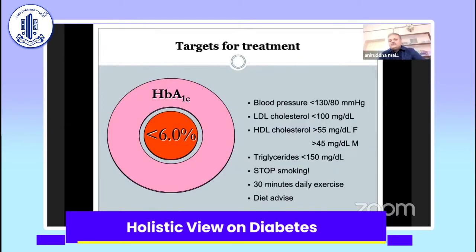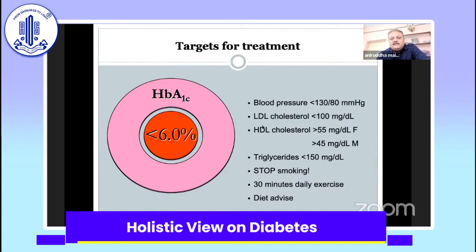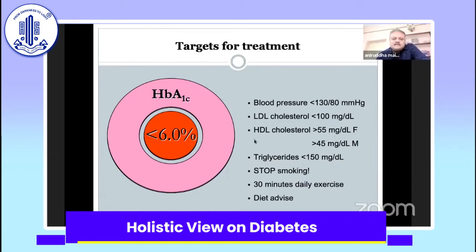This is based on the STENO2 study, with many recommendations from international associations. If the criteria are maintained, the chances of microvascular complications like retinopathy are reduced. These are very strict, intensive control targets — just recommendations to keep in mind — and we should refer to the endocrinologist for strict control of not only diabetes, but also blood pressure and cholesterol.